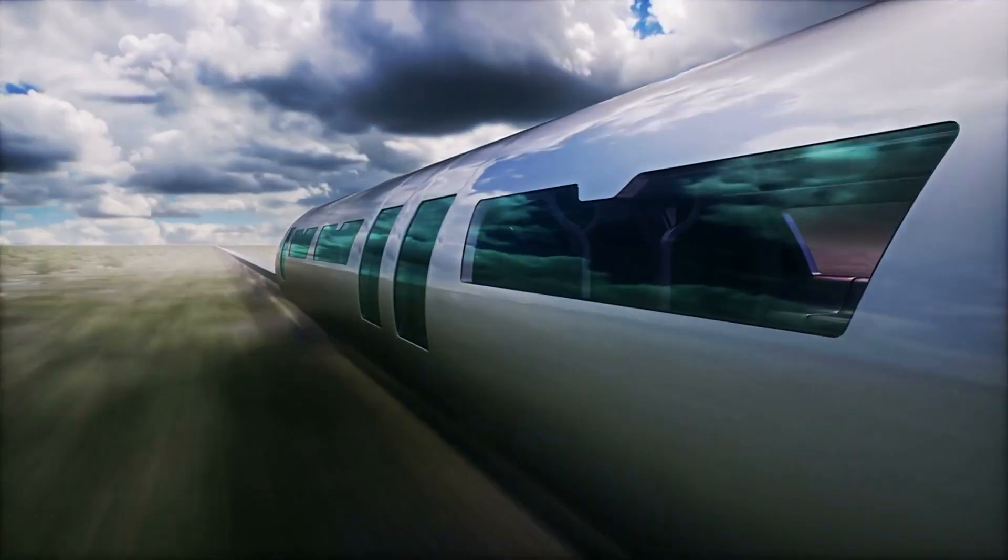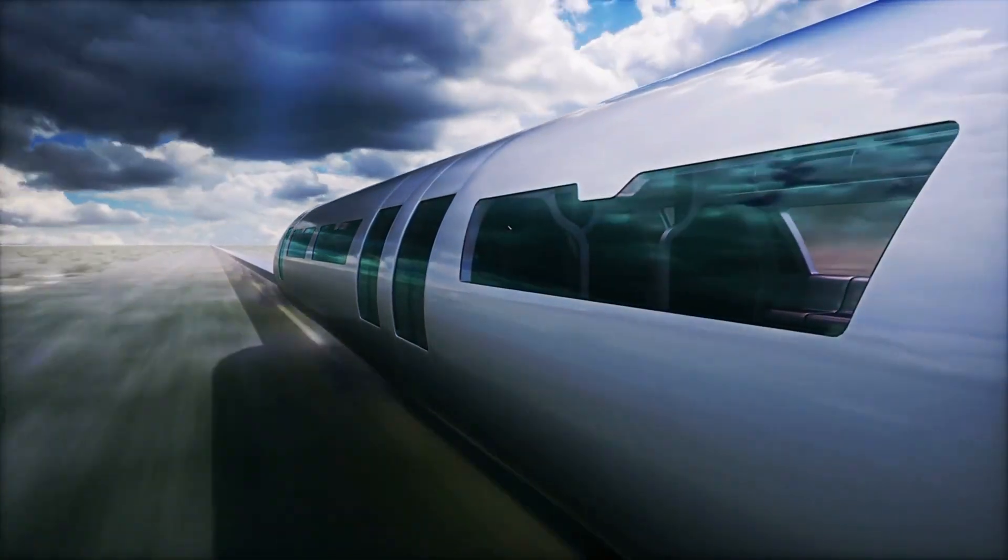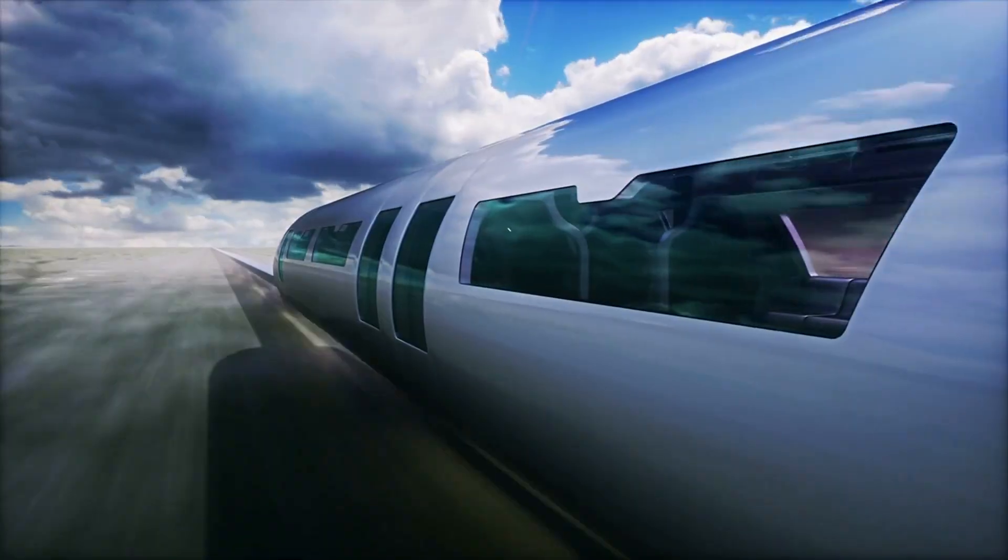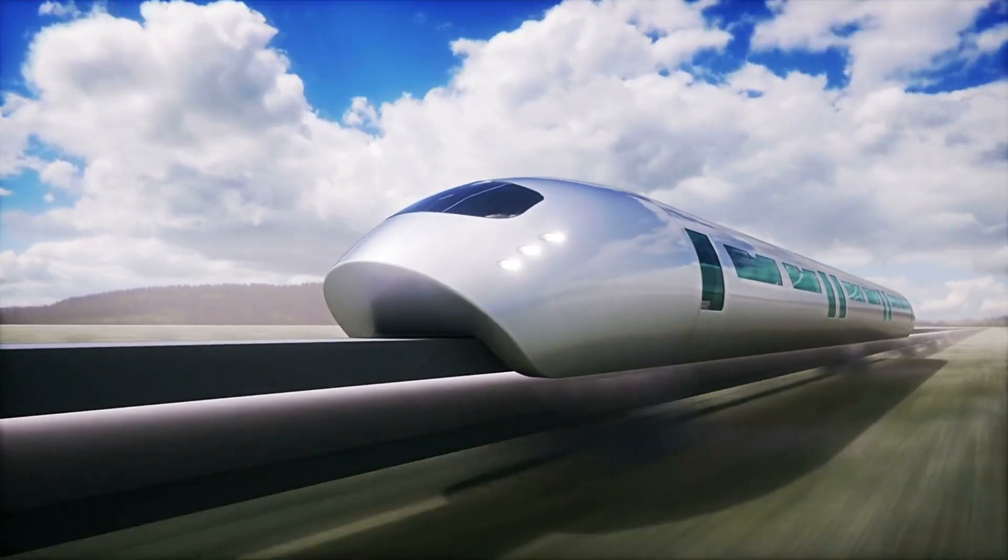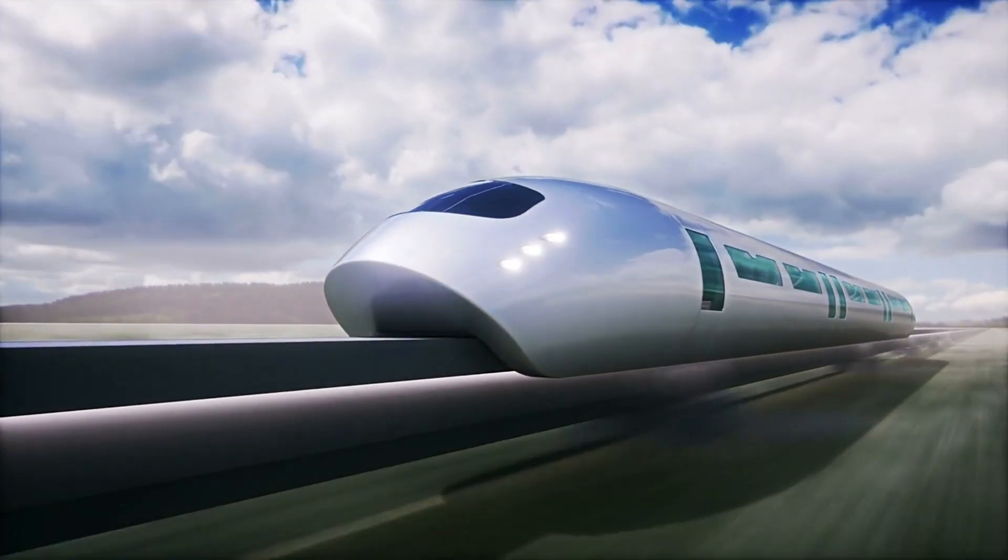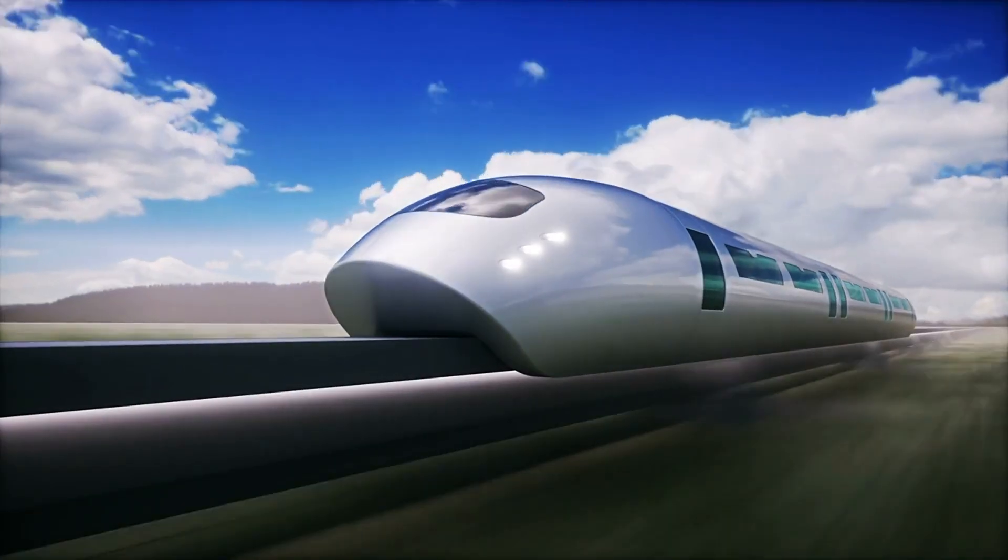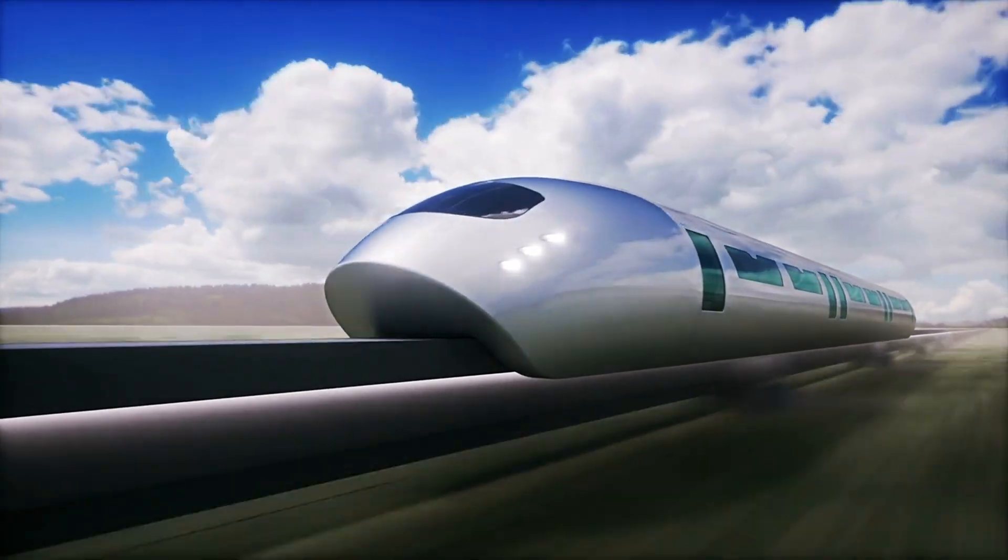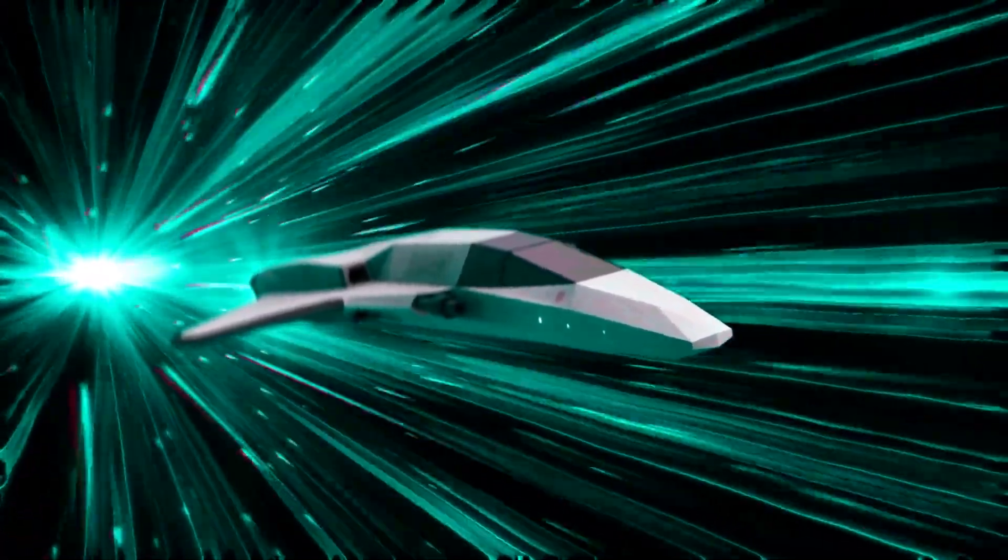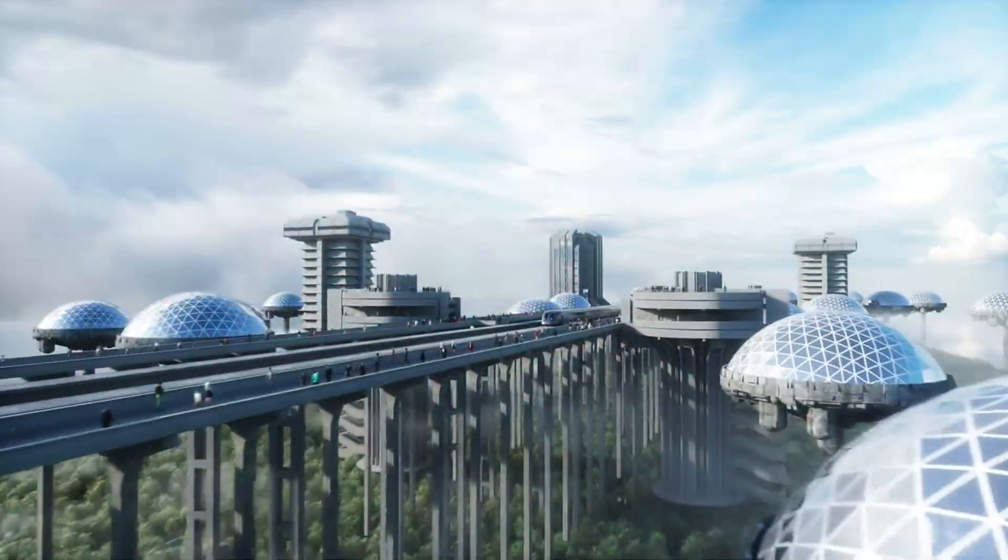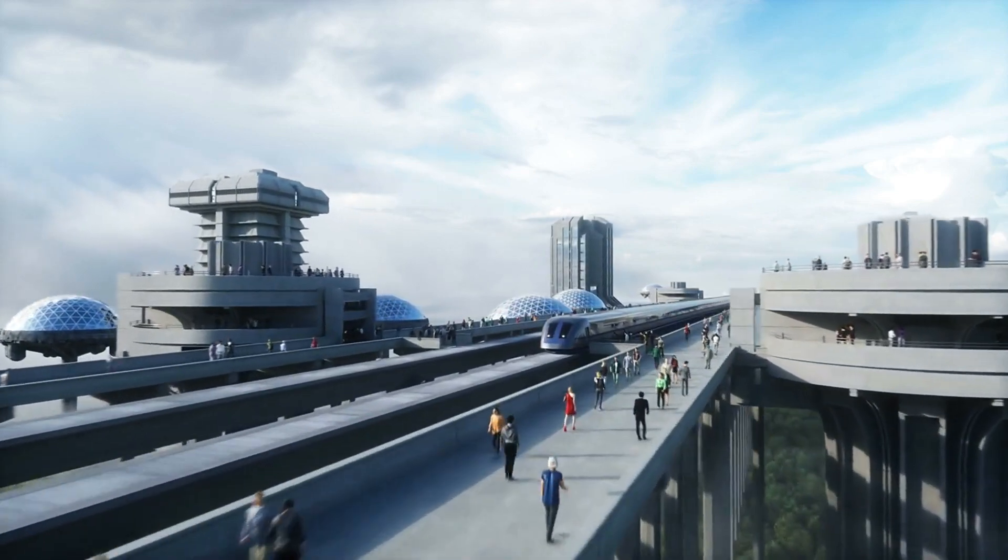But the real magic lies with near-perfect vacuum tubes that eliminate 99.9% of air resistance, allowing speeds faster than a jet. Imagine New York to L.A. in just 30 minutes. These futuristic trains are powered by linear electric motors and magnetic fields, controlled by AI-powered stabilizers that calculate levitation and acceleration in real-time, perfectly balanced at hypersonic speeds. It's the same tech used in particle accelerators, only moving people instead of atoms.